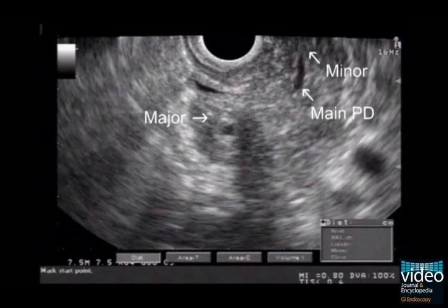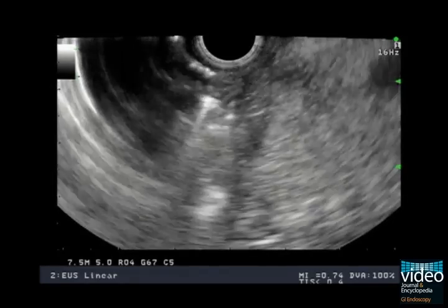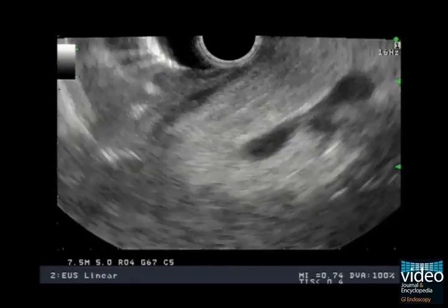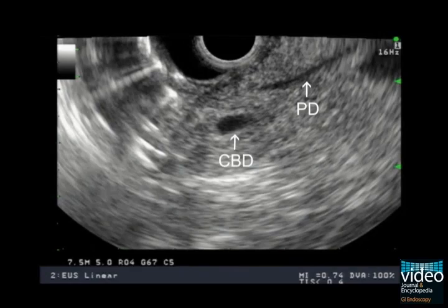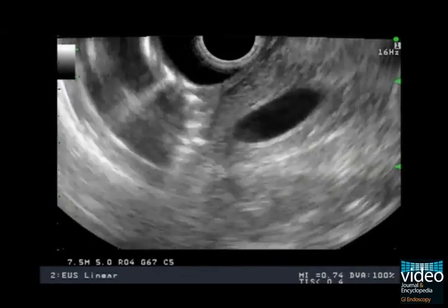Case number two: a 55-year-old female with chronic intermittent right upper quadrant pain. EUS is performed prior to ERCP for sphincter of Oddi manometry. From the second duodenum, we can see the PD emerging above the CBD, which is a clue to the presence of divisum.